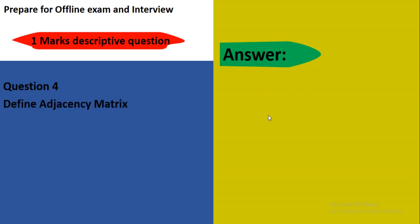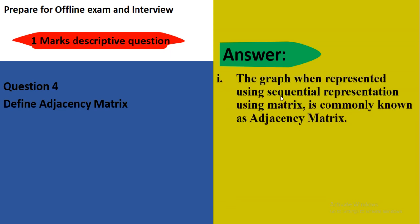Define adjacency matrix. What is meant by adjacency matrix? The graph when represented using sequential representation using matrix is commonly known as adjacency matrix. Here is a graph with vertices 1, 2, 3 and 4. And here we are representing the matrix. Number of vertices is 4, so you need to take 4 rows and 4 columns. So 1 to 4, edge is present here. Suppose this is 1, 2, 3, 4. So you need to mark 1 here because the edge from 1 to 4 is present.